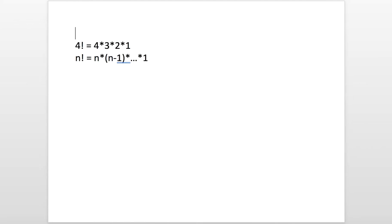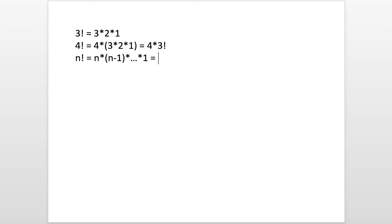Let's look at factorial of 3: it's 3 times 2 times 1. If you compare 4 factorial and 3 factorial, you can say 4 factorial is basically 4 times 3 times 2 times 1, which is 4 times 3 factorial. So we can summarize this and say n factorial is basically n times the factorial of n minus 1. For example, 10 factorial is 10 times 9 factorial.